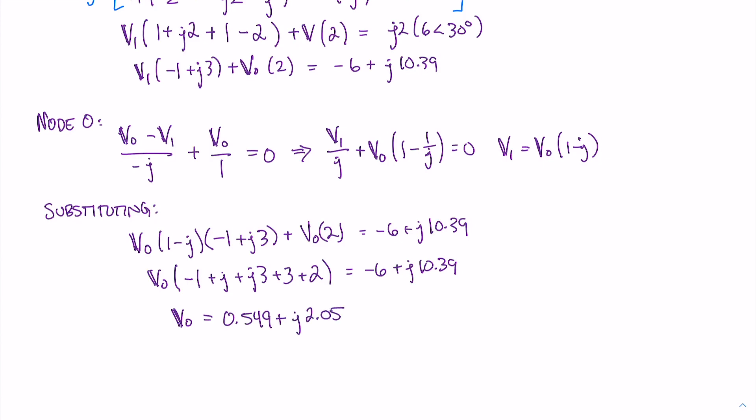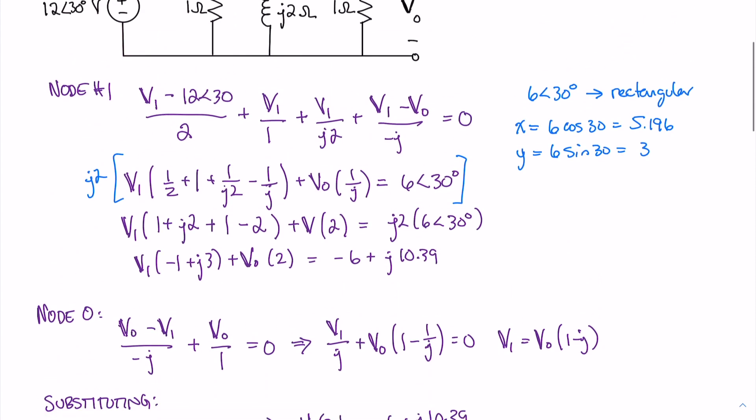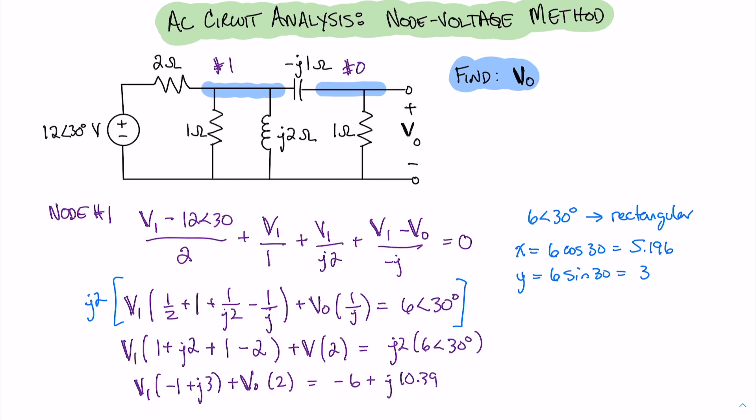Converting that back into polar coordinates, we get 2.12 angle 75. Comparing that value of 2.12 angle 75 to our incoming voltage of 12 angle 30, we can see we had a reduction in voltage, which we would have expected because this looks like a voltage divider, but the inductor and capacitor also gave us some shift in our angle. We went from 30 degrees to 75 degrees.